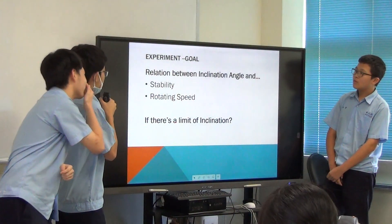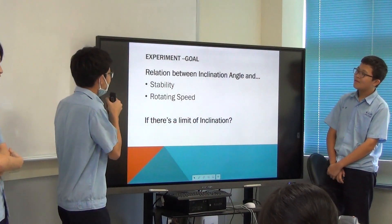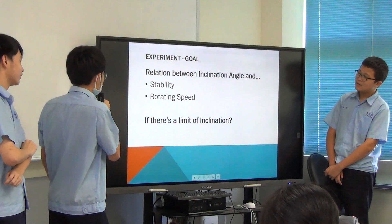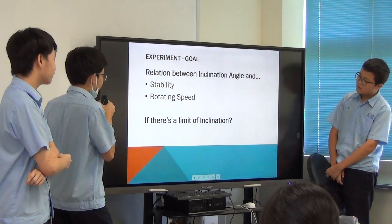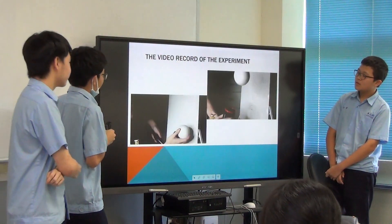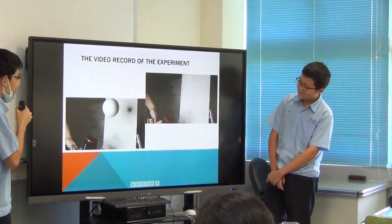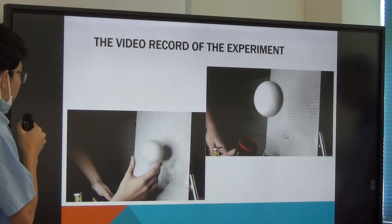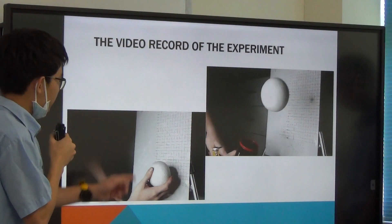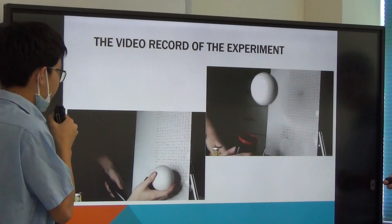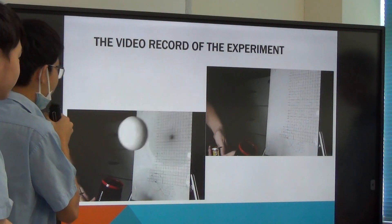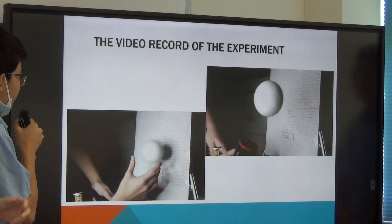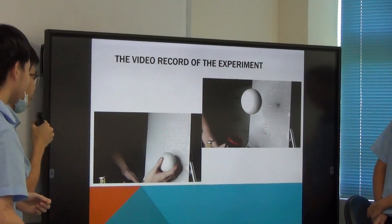Our purpose is to find a relation between inclination angle and the ball's behavior — including its stability. There is a limit of inclination. We also looked at the shadow on the board edge: it changes based on the distance between the light and the ball, a little bit like a solar eclipse.